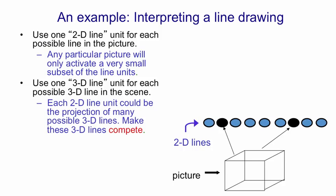Now, what we're going to do is have a whole bunch of 3D line units, one for each possible 3D line or 3D edge. So each of the 2D line units could be the projection of many different possible 3D lines. We therefore need to make the 2D line unit excite all those 3D lines but we also need to make them all compete with one another because you can only see one of them at a time.